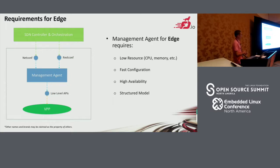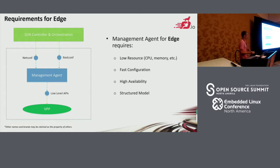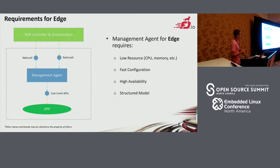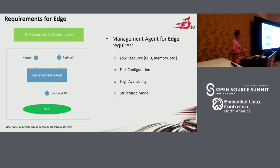For the management agent, there are four requirements. First, for edge, it's low resources — we need less CPUs, less memory, and other resources. Second, for edge, the end devices join and move very quickly, so we need a faster configuration rate. Third, especially for edge used for telecom, high availability is also required. And fourth, we also need to support the structured model, because many vendors have their own devices and configurations. This configuration is unstructured, so we need a standard and specification to help us structure the definition and the configuration.